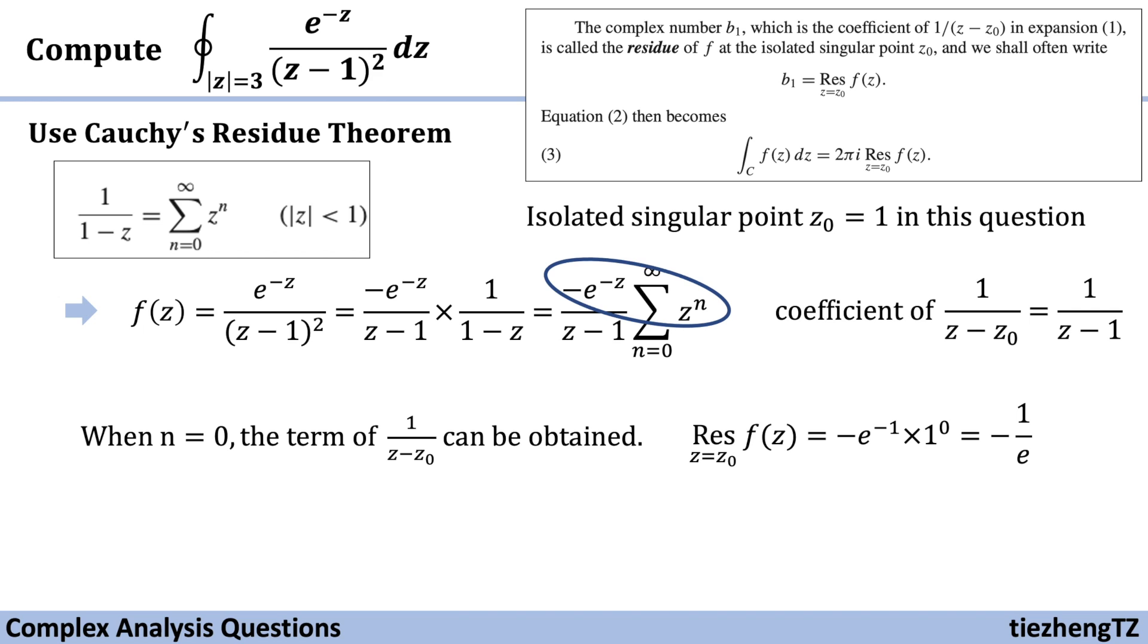So the equation ∫e^(-z)/(z-1)² dz equals 2πi times the residue, which is -1/e. So the final answer using Cauchy's residue theorem is -2πi/e.